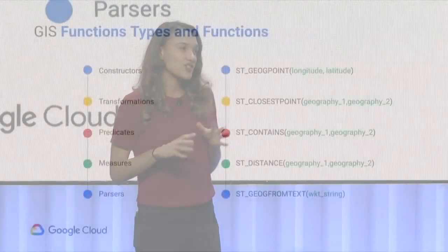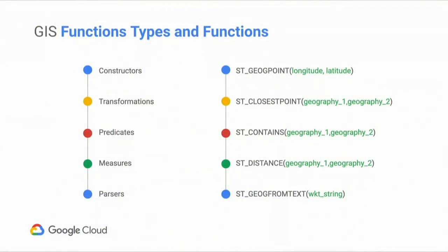So the geography data type represents a point set on the Earth's surface. By point set, this can be an actual point on the surface, or a set of points such as a line string or a polygon — and we'll see this in action in the demo. You also have GIS functions and types, and if you're familiar with PostGIS you'll be familiar with these, as they essentially operate on the geography data type.